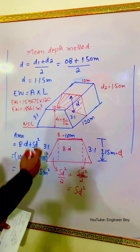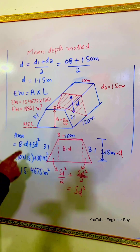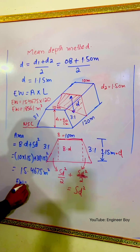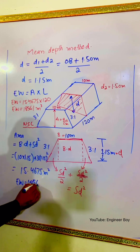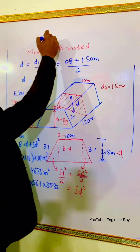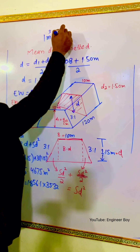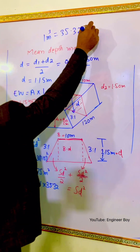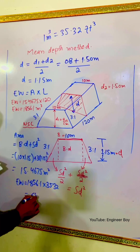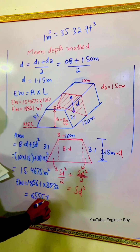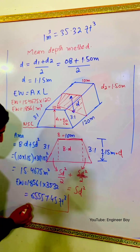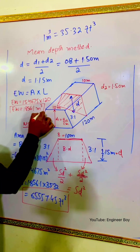That's the earthwork in cubic meters. We can also convert this into cubic feet. Earthwork = 1856.1 × 35.32 = 65,557.45 cubic feet, because 1 cubic meter equals 35.32 cubic feet. So we have two answers: one in cubic meters and one in cubic feet.